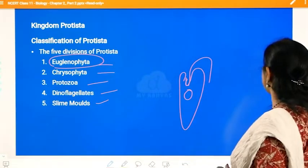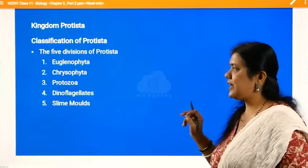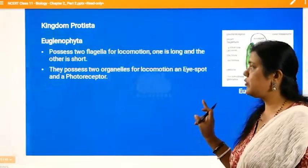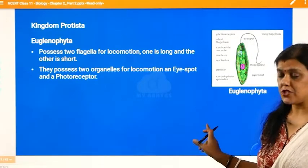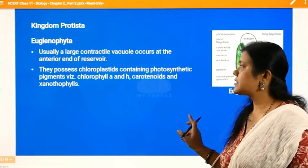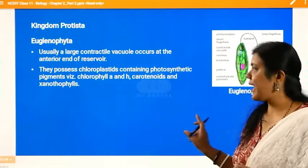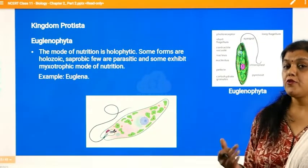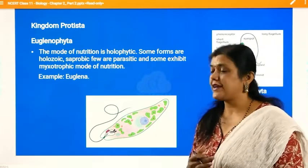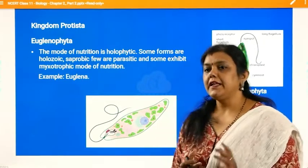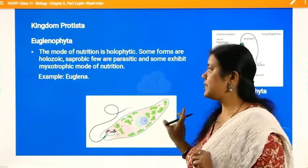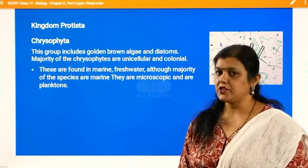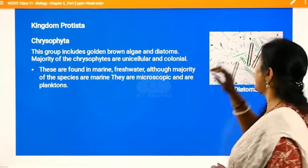Next, we are going to start with the next division, that is chrysophyta. We discussed what euglenophyta is, what their flagella are used for, what type of vacuoles they have, whether they have chloroplasts, and their mode of nutrition. Now we are going to start with kingdom protista's next division, which is called chrysophyta.